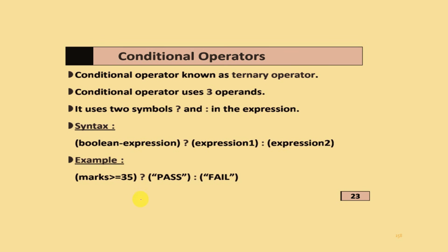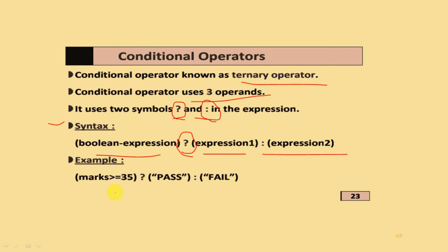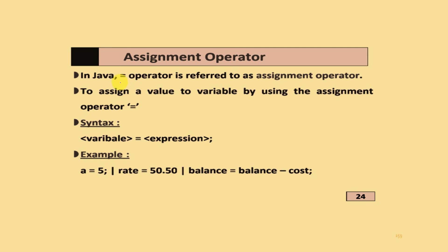Conditional operators are also known as ternary operators. They use three operands and two symbols - question mark and colon. The syntax is: expression ? expression1 : expression2. For example: marks >= 35 ? pass : fail. The assignment operator in Java is the = sign, used to assign a value to a variable. Examples: a = 5, rate = 50.50, balance = balance - cost.